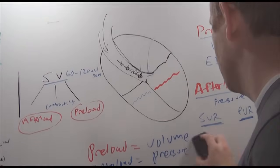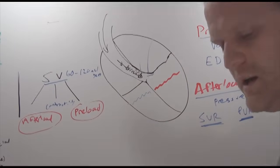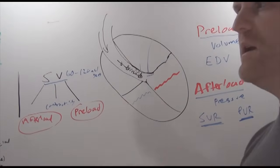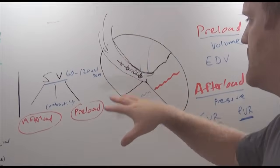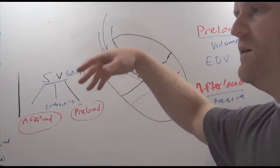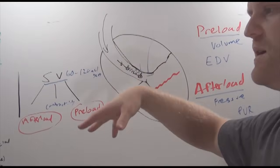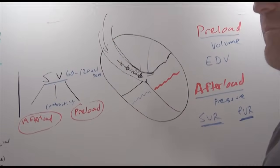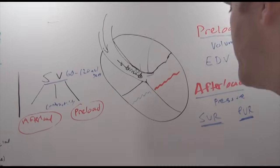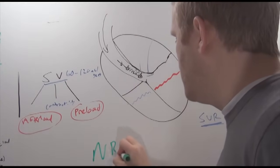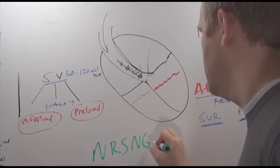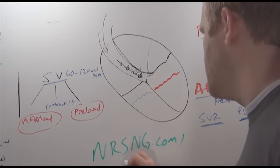But in the meantime, if you head over to nrsng.com slash hemodynamics, you can get a free download, a little chart that has all of this graphed out, including heart rate, cardiac output, cardiac index, and different numbers that we can manipulate for high or low values. That's n-r-s-n-g dot com slash hemodynamics.